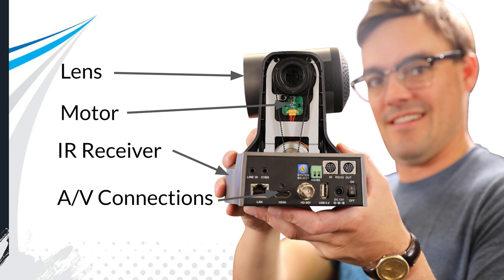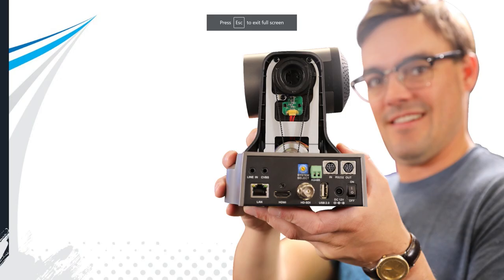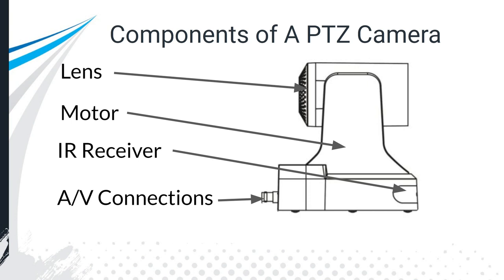There's a lens, and the lens is remotely controllable. The lens is where the light comes in and is transferred down into the image sensor. The lens is also the component that optically zooms the camera, and that is all controllable via the serial and network ports of the camera. There's also a motor, an IR receiver, and all of the AV connections. This picture shows the lens, the motor inside that sleeve, the IR receiver in the front, and the AV connections on the back.